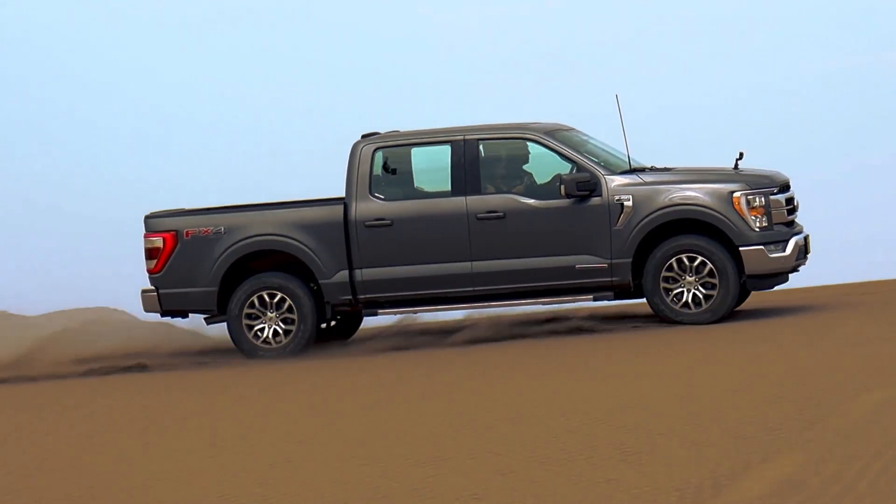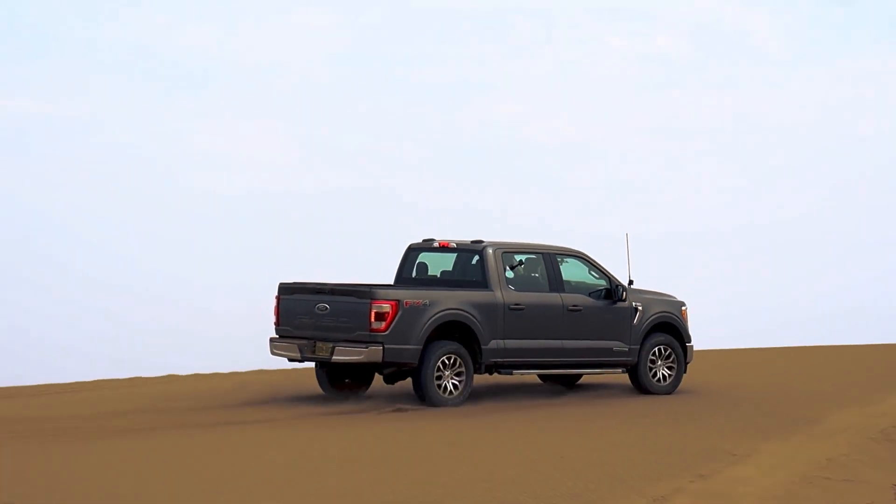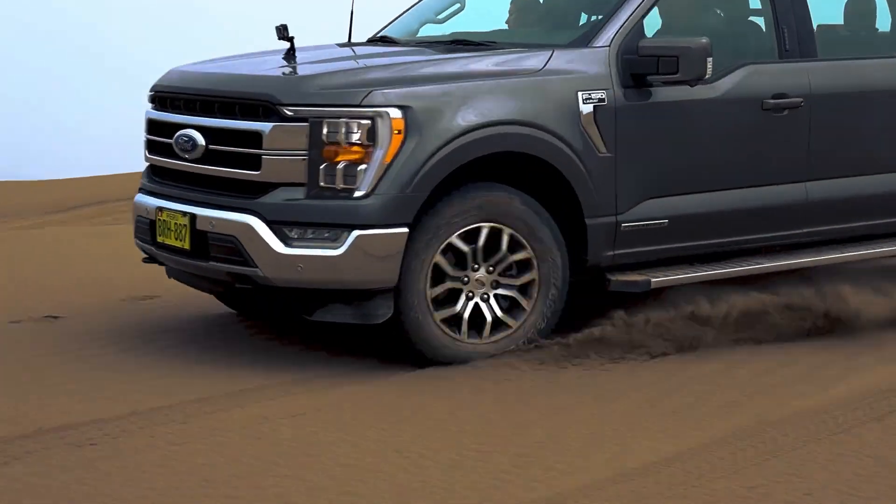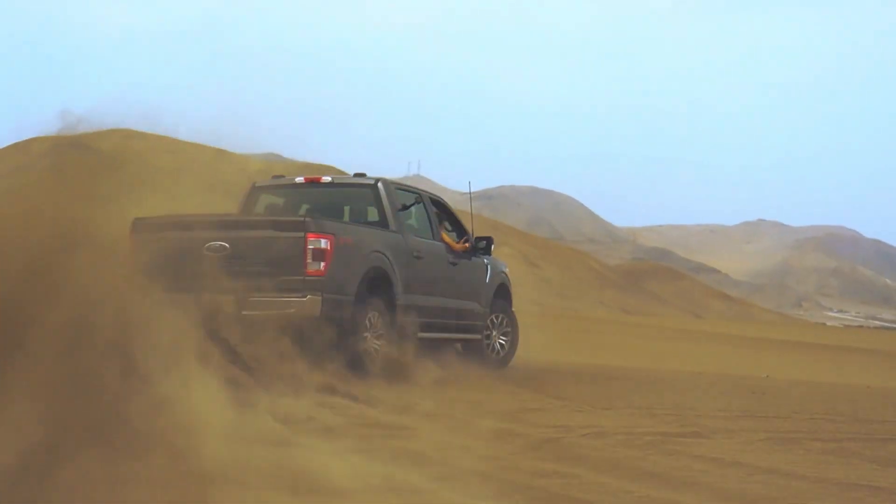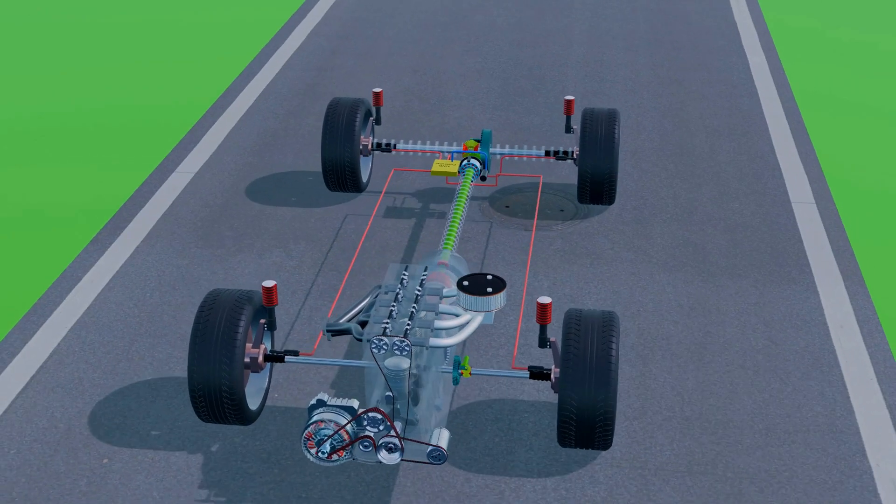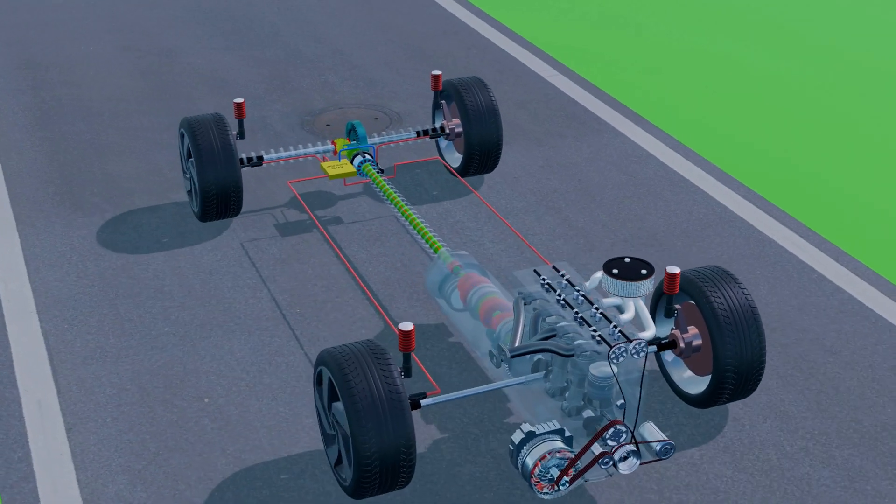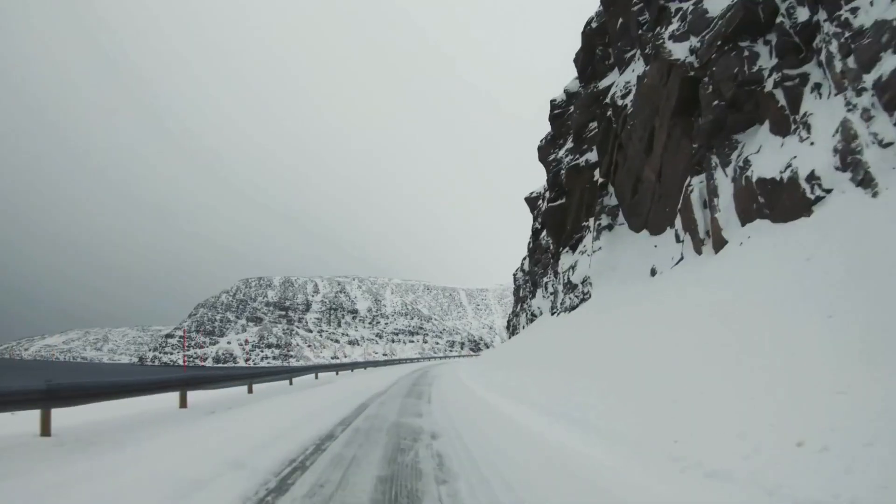AWD systems are mainly designed for enhanced traction control. The vehicle decides automatically when to run in front wheel, rear wheel, or all-wheel mode, adjusting power as needed based on driving conditions. It delivers excellent traction control even on road, especially useful in rain, snow, or sharp turns.